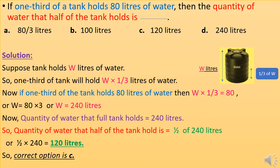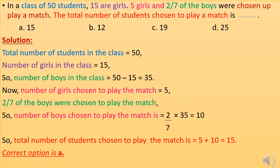So the correct option is C. In a class of 50 students, 15 are girls. 5 girls and 2/7 of the boys were chosen to play a match. The total number of students chosen is: number of boys = 50 − 15 = 35. Number of girls chosen = 5. Number of boys chosen = (2/7) × 35 = 10. Total students chosen = 5 + 10 = 15. So the correct option is A.